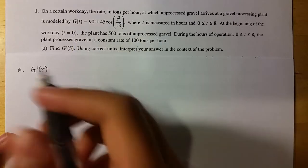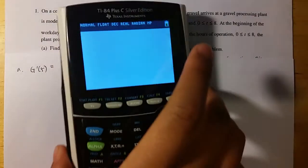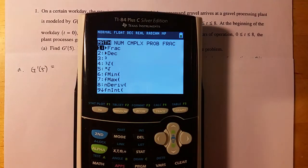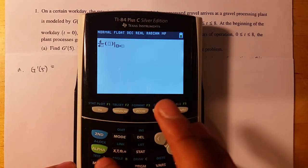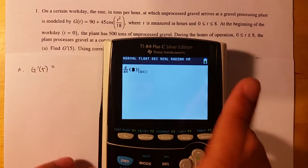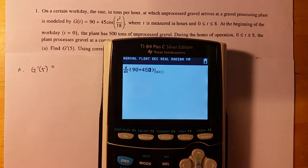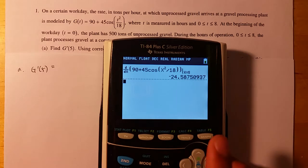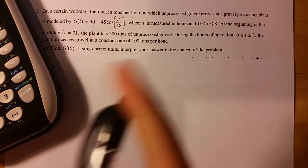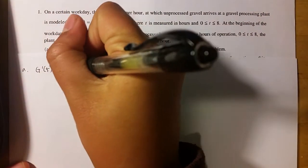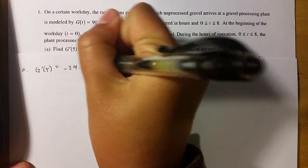Finding the actual g prime of 5 shouldn't be too difficult. You can just use your calculator, you press math, and then 8 to do a derivative. So d dx, and then the function is just 90 plus 45 cosine of t squared over 18, x equals 5. And you should get negative 24.587, or 588.